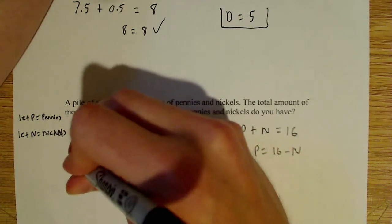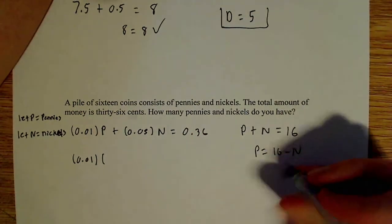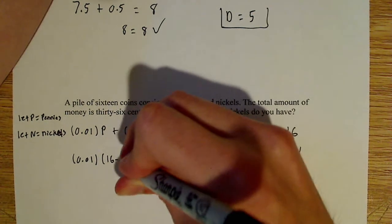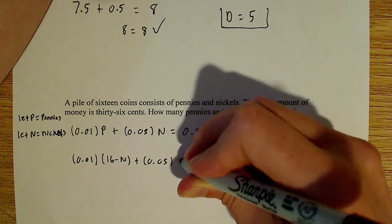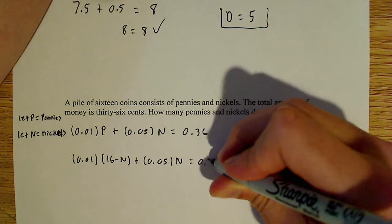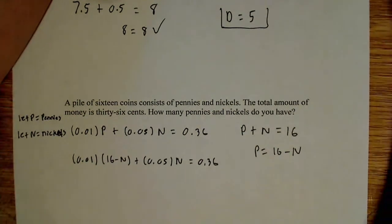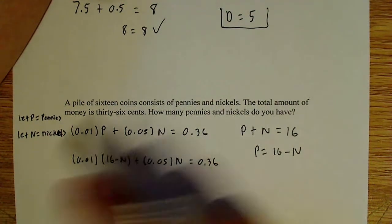I can simply plug it right in. So 0.01 times P, 16 minus N, and then that's plus 0.05 N is equal to 0.36. Now you've just got to be a little bit careful here. I mean, it's nothing to really be too concerned about. But you have to distribute this out here.